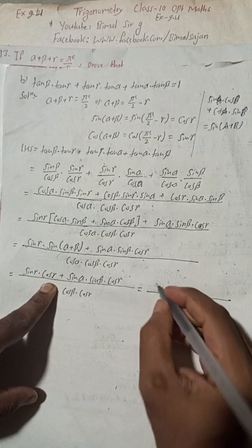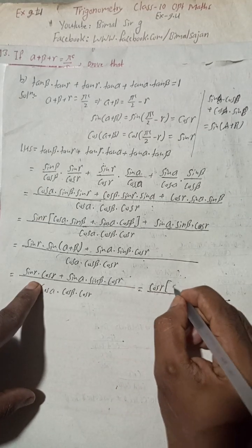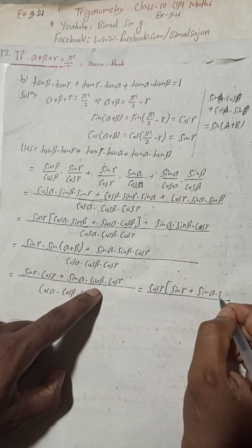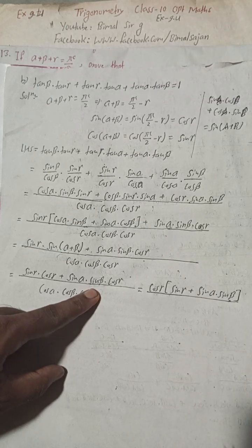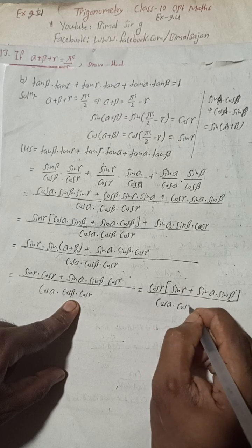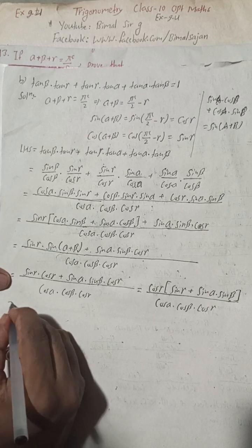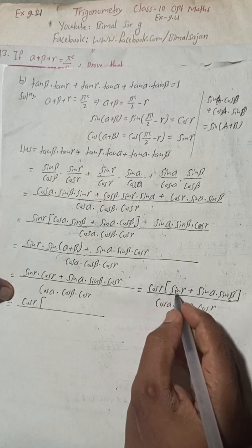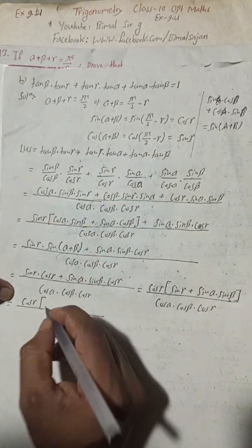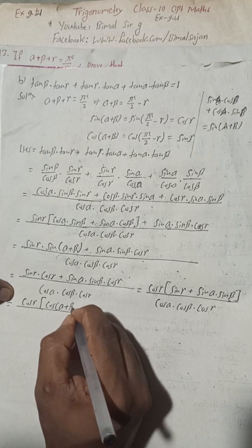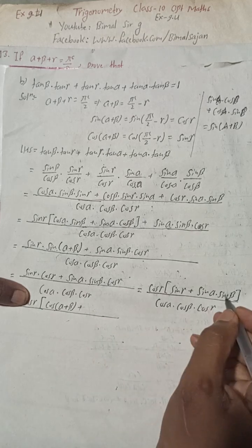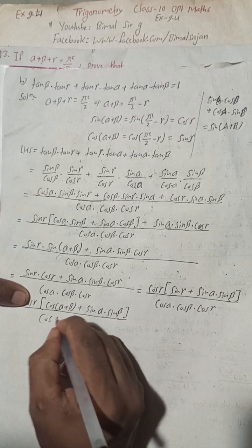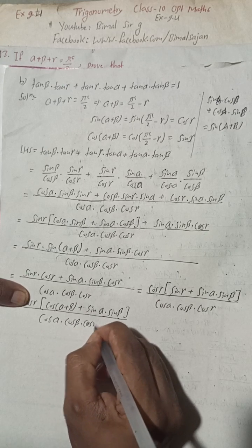Now cos gamma is common in the numerator, so we take cos gamma out. This gives cos gamma times (sin gamma plus sin alpha sin beta), divided by cos alpha cos beta cos gamma. Next, sin gamma equals cos(alpha plus beta) from our earlier derivation. Substituting, cos(alpha plus beta) equals cos alpha cos beta minus sin alpha sin beta. So we replace sin gamma with cos alpha cos beta minus sin alpha sin beta.